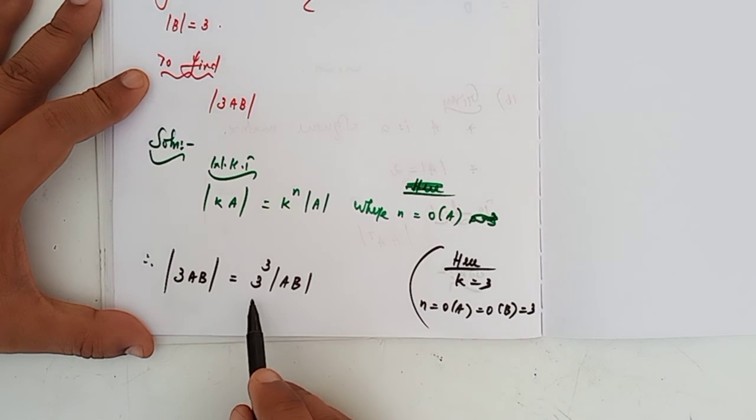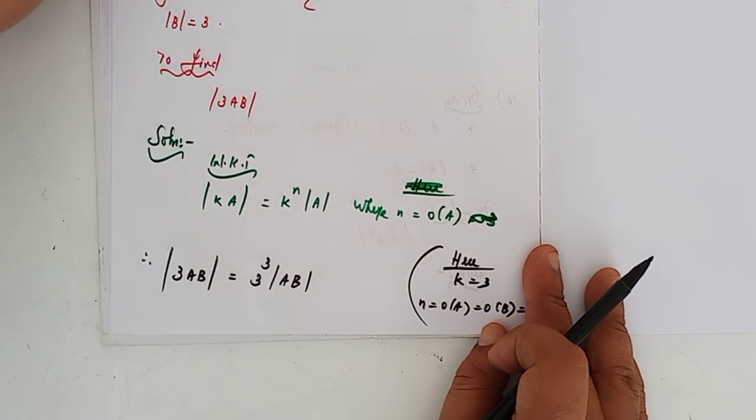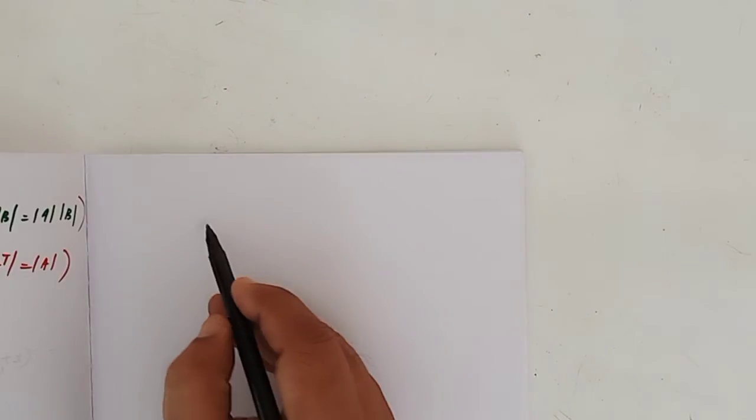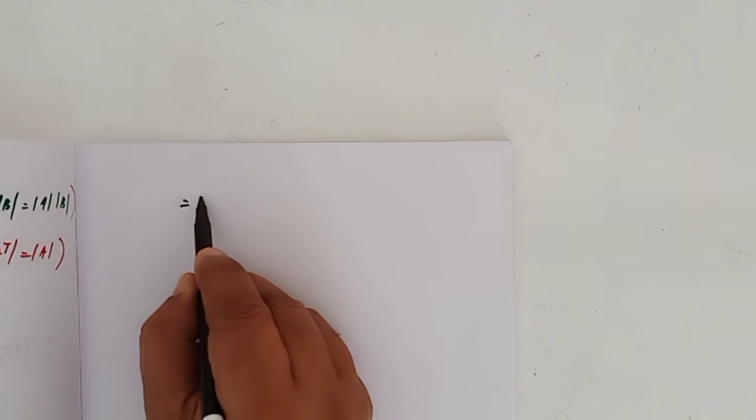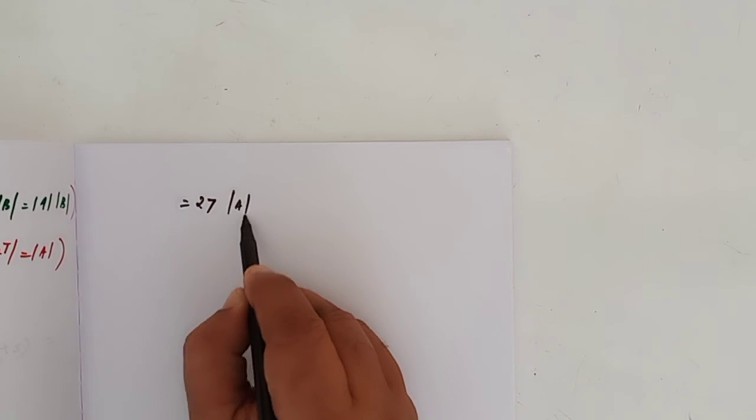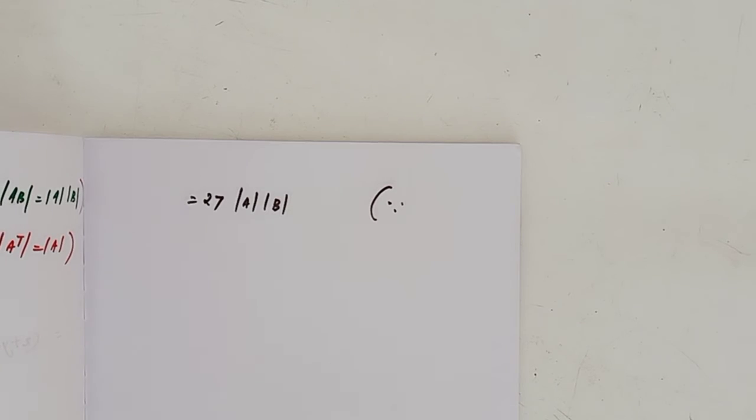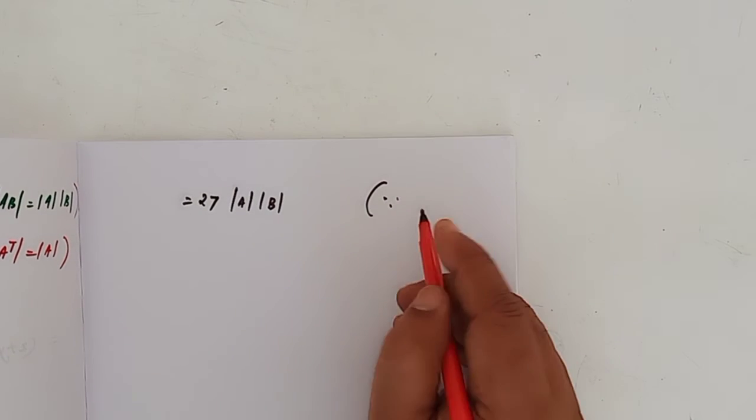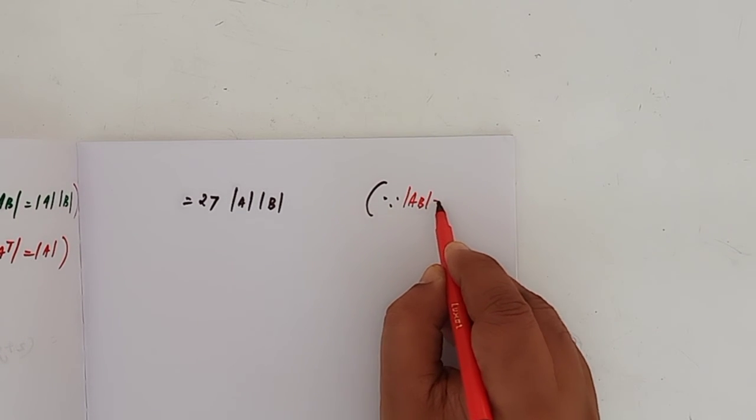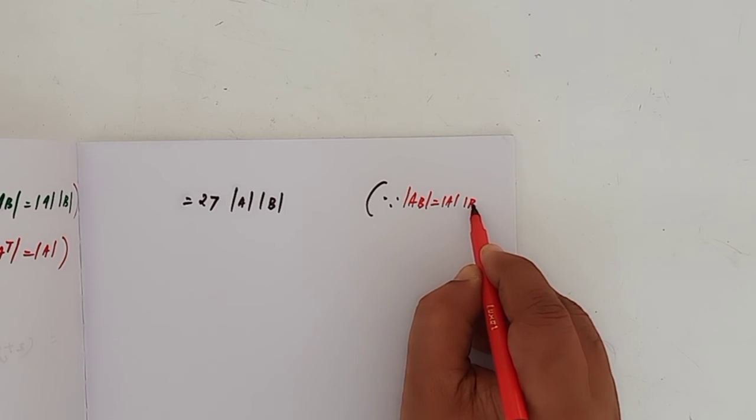Then 3 power 3 equals 27, so this equals 27 times determinant of A times determinant of B. Since the property states that determinant of AB equals determinant of A times determinant of B.